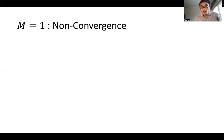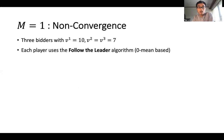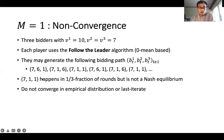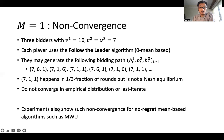For the non-convergence result, we construct an example with three bidders with values 10, 7, 7 using the follow-the-leader algorithm, which is a mean-based algorithm. They may generate bidding paths such as (7,6,1) in round one, (7,1,6) in round two, and (7,1,1) in round three. It turns out (7,1,1) happens in one-third of rounds but is not a Nash equilibrium, so there is no time-average convergence. The bidders also do not converge in the traditional empirical distribution sense or in last iterate. Experiments also show that algorithms like MWU do not converge in this case.